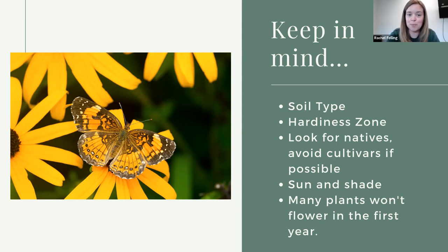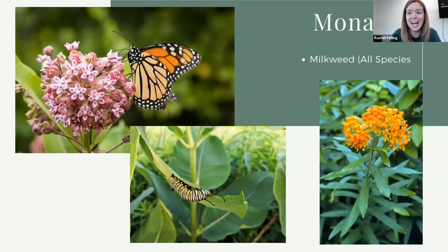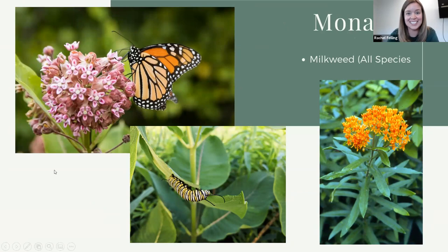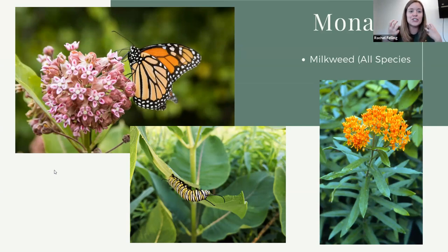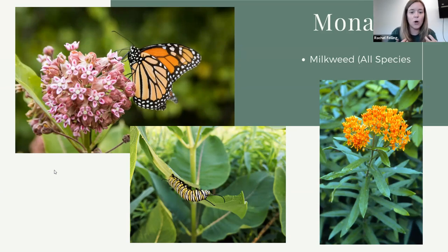Let's dive into our first butterfly, one that everybody has probably seen: the monarch. Monarch butterflies are one species that we've done a really good public education campaign on in the last decade or two. They are a specialist that needs just one kind of plant — they can only use that one kind of plant to host on. Even young kids know about monarchs and their host plant, milkweed.